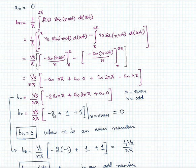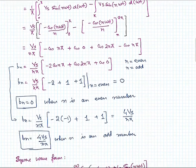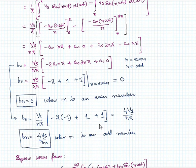Now solving this expression for even and odd values, we can see what will result. When n is an even number, this expression comes out to be -2 + 1 + 1. Considering n is equal to any even number like 2, 4, or 6, the bn will come out to be 0. And if n is an odd number, for any value of n like 1, 3, 5, this comes out to be 4Vs by nπ.